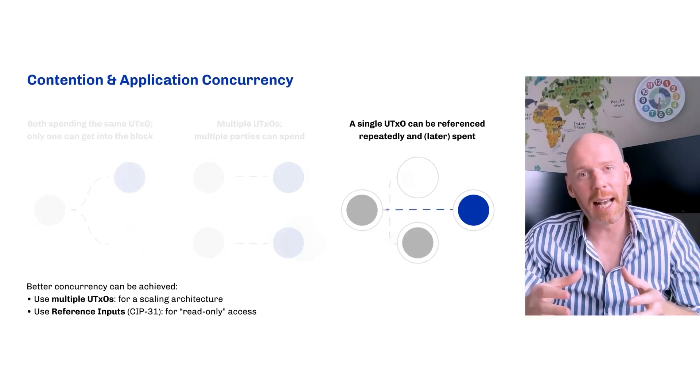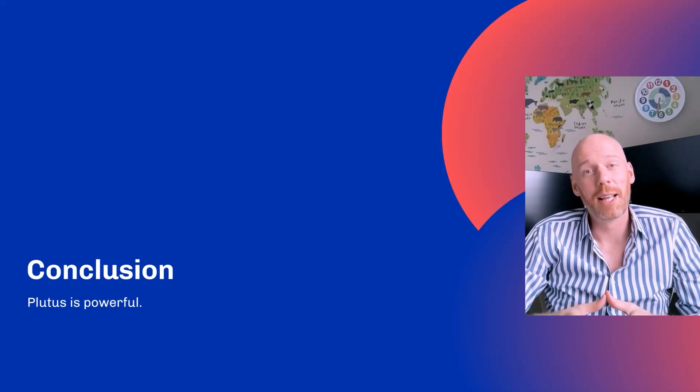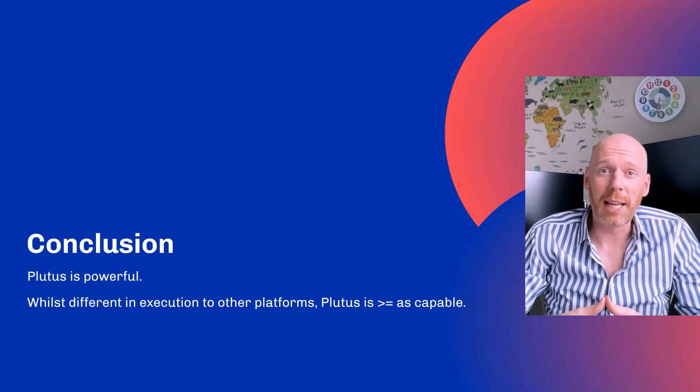Plutus is powerful. And whilst different in execution to other platforms, Plutus is just as capable, if not better, than the competition. Plutus is about to get even better than that, both in terms of user experience with things like collateral outputs, and performance with the enhancements we're bringing to the Plutus interpreter. I hope you enjoyed this look into some of the fundamentals around Plutus, and I hope you'll enjoy building on what is going to be the greatest smart contract platform for the next five years. Thank you.